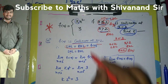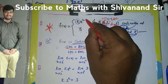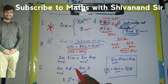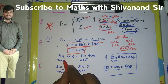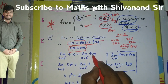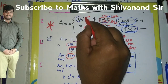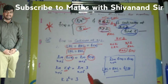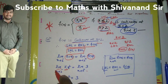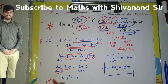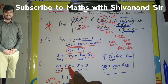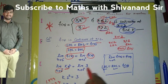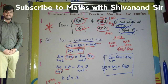Equating LHL = RHL: substituting x = 2 into kx² gives k·4 = 3. Therefore k = 3/4. For the quick method: since it is continuous, directly set kx² = 3 and put x = 2. So k·4 = 3, giving k = 3/4. Hence option B is correct.